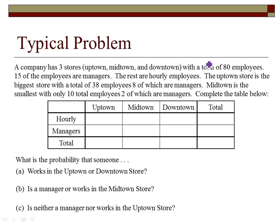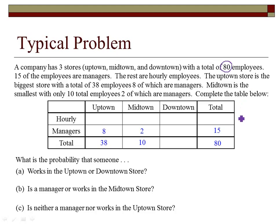We'll start by filling in the table in order. Total of 80 employees goes in as the grand total. Both the row totals and column totals will add up to 80, which gives us a lot of clues. We're told 15 employees are managers, so we put 15 as the total for managers. The uptown store has 38 employees total with 8 managers. The midtown has 10 employees with 2 managers. Then 80 minus 15 gives us 65 hourly employees.